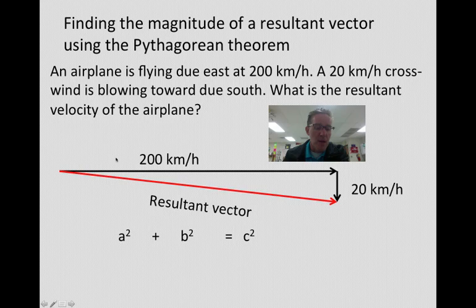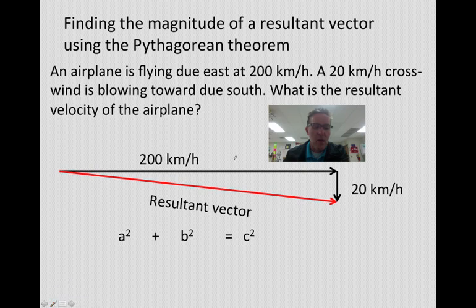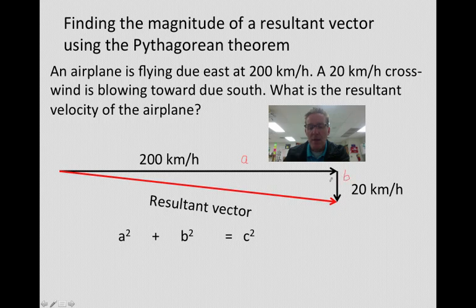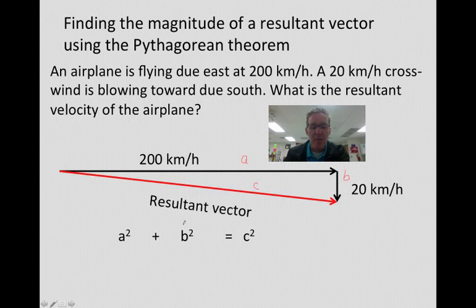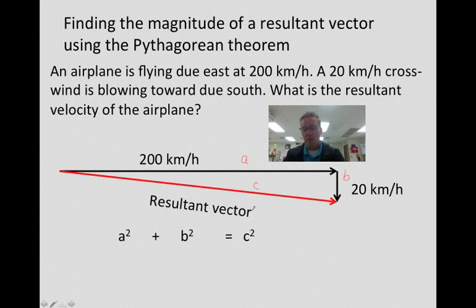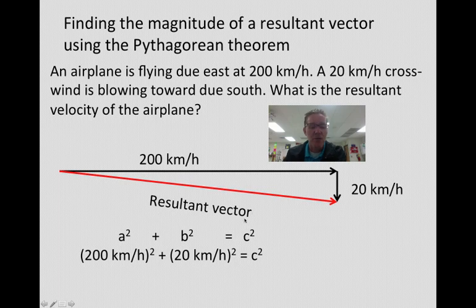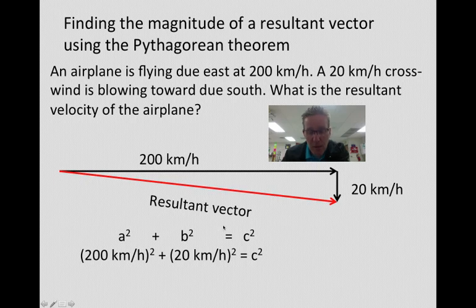I think it's a good idea to go ahead and draw it out, and you can label the sides of your triangle. This could be side A, this could be side B. Now, it doesn't matter as far as side A and B what you call them. I could make this B and this A. However, it does matter that we make the hypotenuse side C, because of our relationship of A squared plus B squared equals C squared. Since I know what those sides are, this is going to be fairly straightforward. So we have 200 kilometers per hour squared plus 20 kilometers per hour squared.